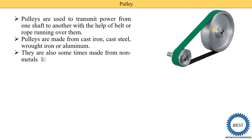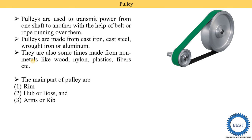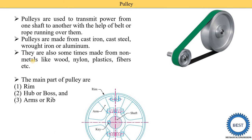Pulleys are also sometimes made from non-metallic materials like wood, nylon, plastic, and fiber. So that is the basic introduction of the pulley. Now, the main parts of the pulley are: first, the rim; second, the hub or boss; and third, the arm or rib.